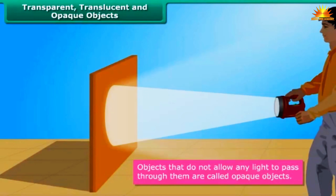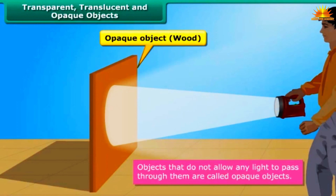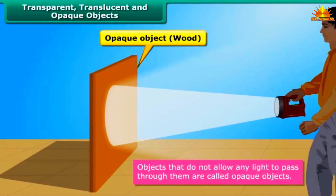Objects that do not allow any light to pass through them are called opaque objects. As a result, we cannot see through them. When light falls on an opaque object, its shadow is formed on the other side of it. Wood, sheets of metal, dark-colored plastics, rocks, etc. are examples of opaque objects.